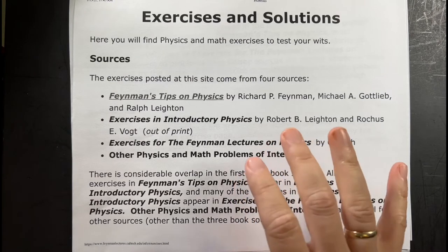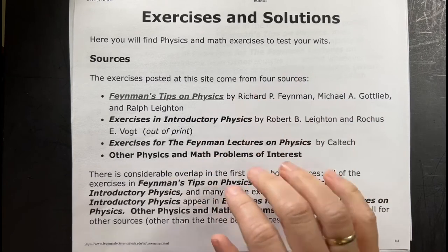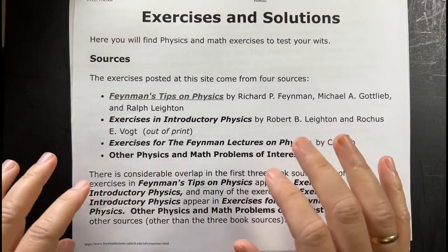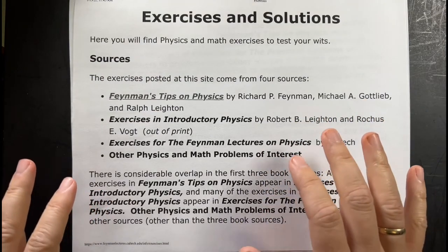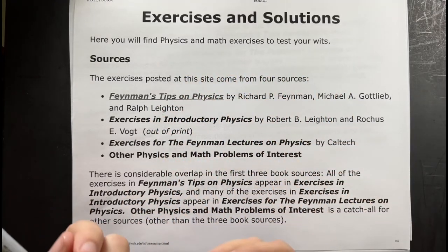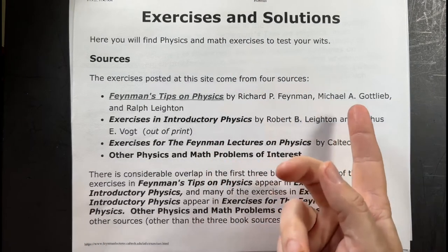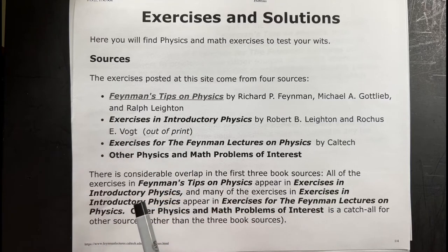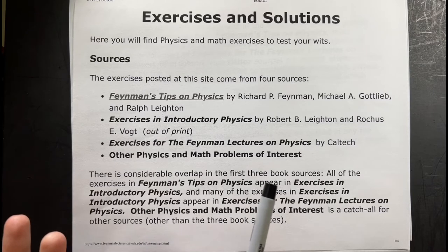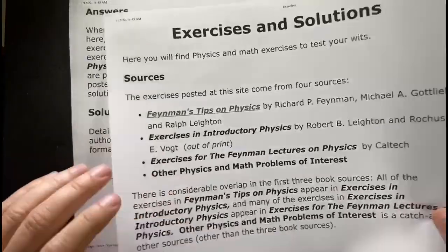I am continuing to work through these posted exercises from different sources. This is a series of exercises — I'll include the link to this site down below. They're put together, chosen, and edited by Mike Gottlieb and others, including Ralph Leighton. I'm working through these problems, and I'm on the bowling ball problem right here.